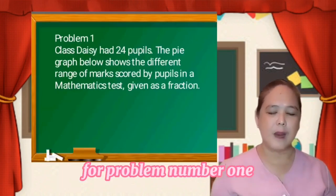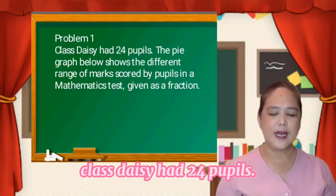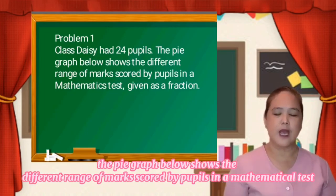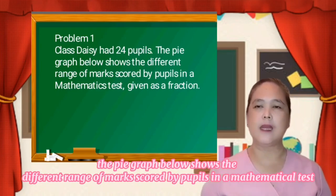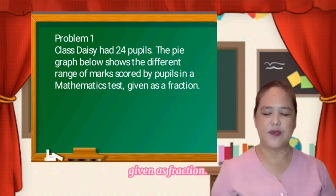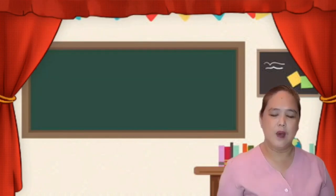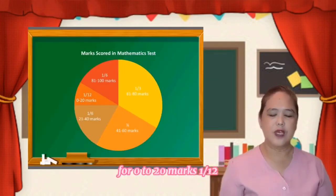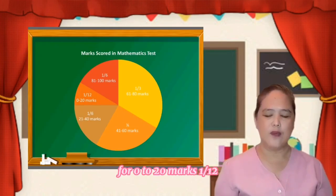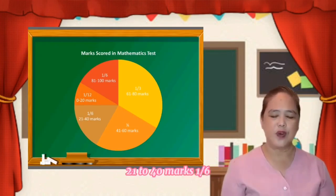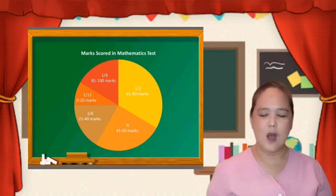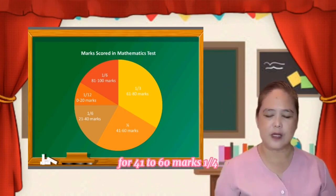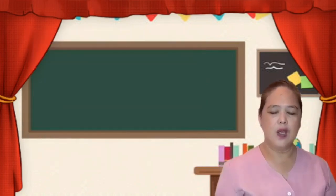For problem number one, class DC had 24 pupils. The pie graph below shows the different range of marks scored by pupils in a mathematics test given as a fraction. For 81 to 100 marks: 1/6. For 0 to 20 marks: 1/12. For 21 to 40 marks: 1/6. For 61 to 80 marks: 1/3. And for 41 to 60 marks: 1/4.